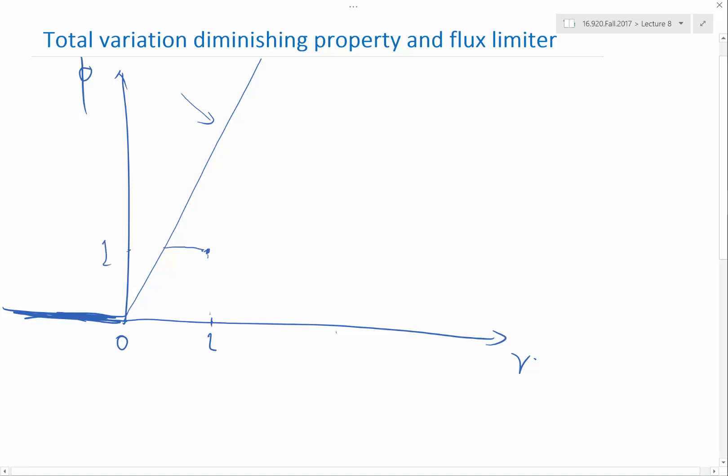It turns out there is a curve like this. So this line is phi equal to 2R. This line is phi equal to R. And this is 1, and this is 2.